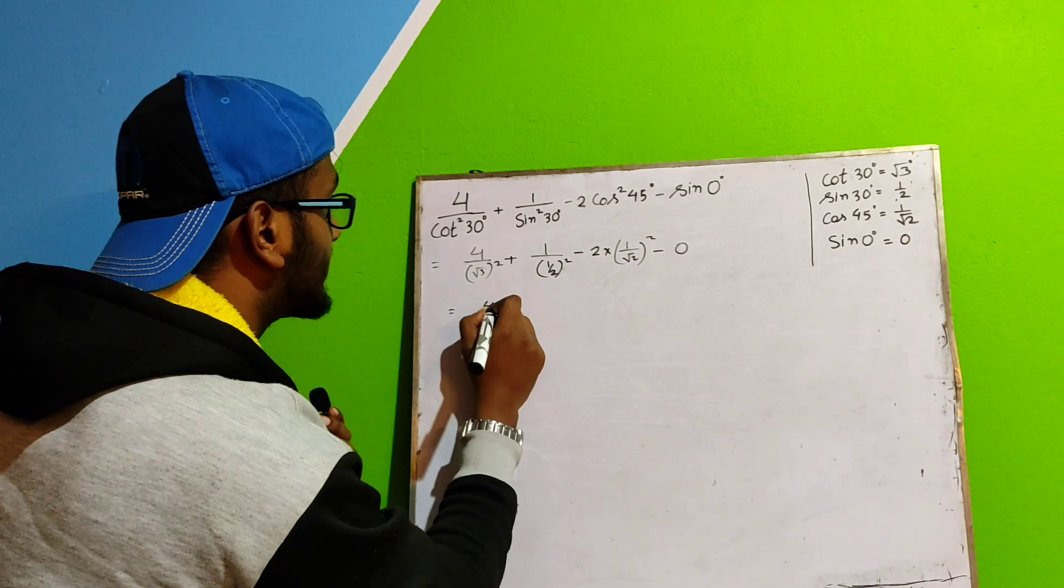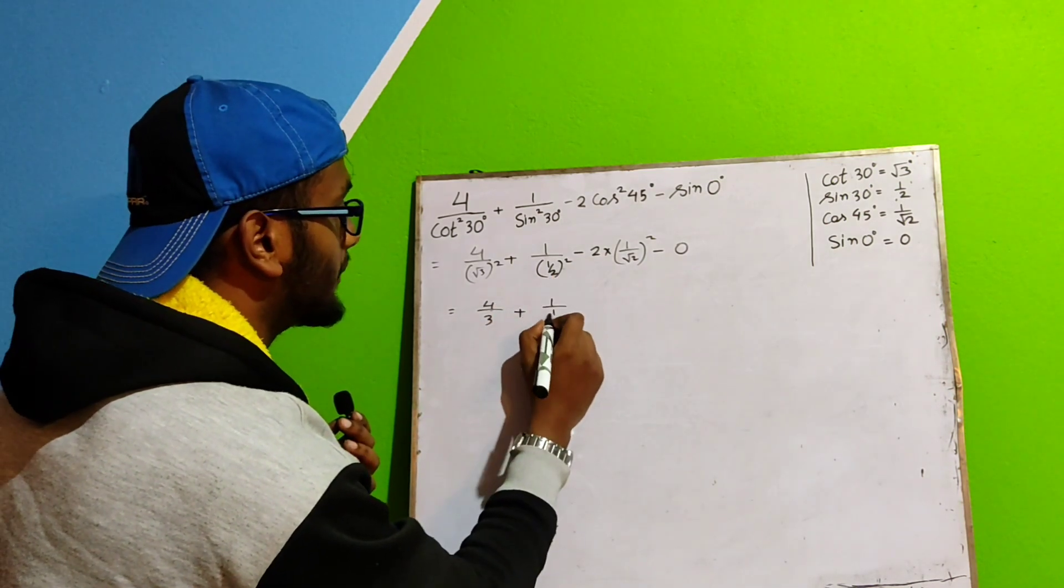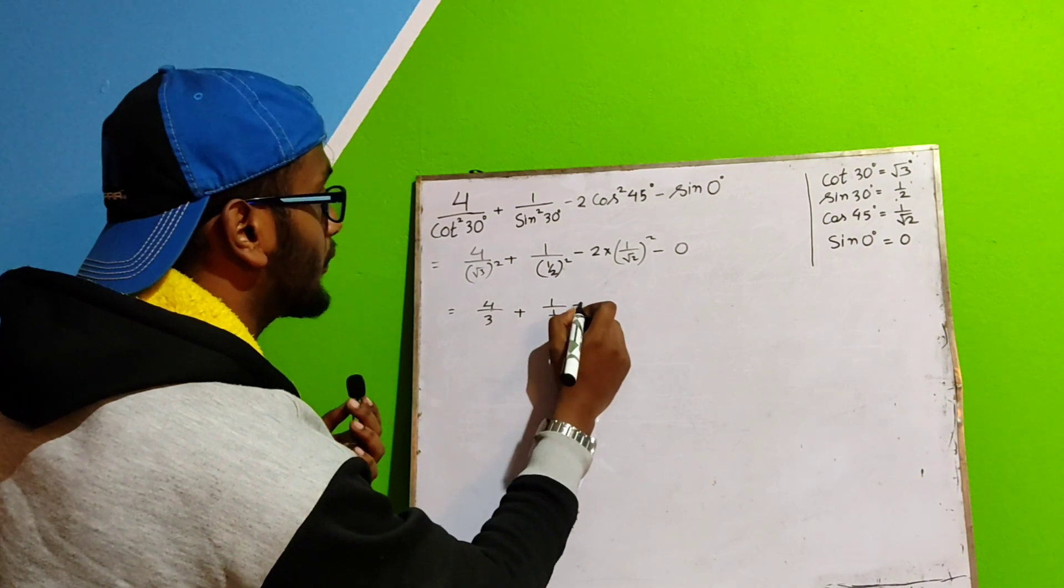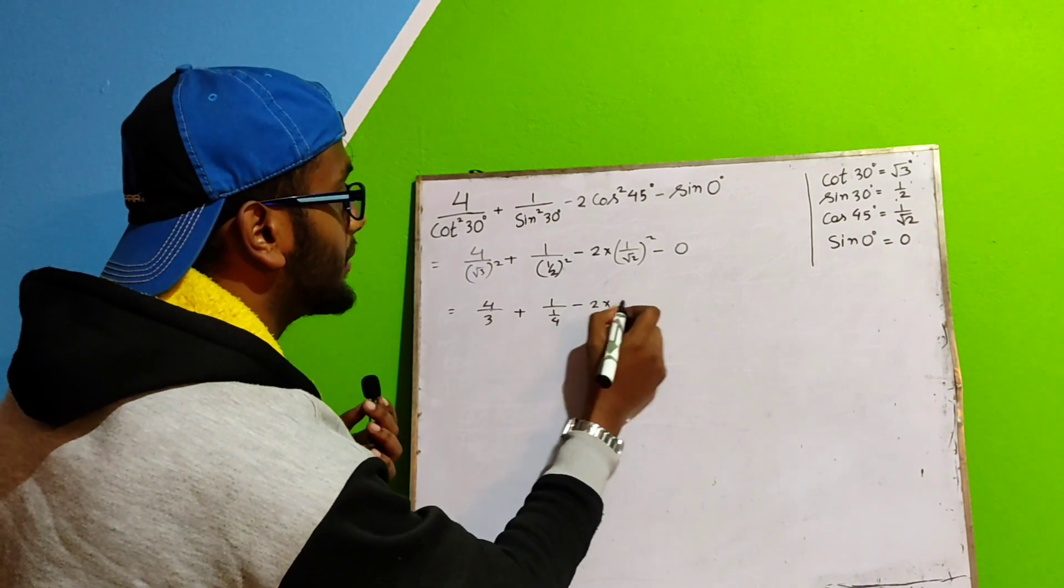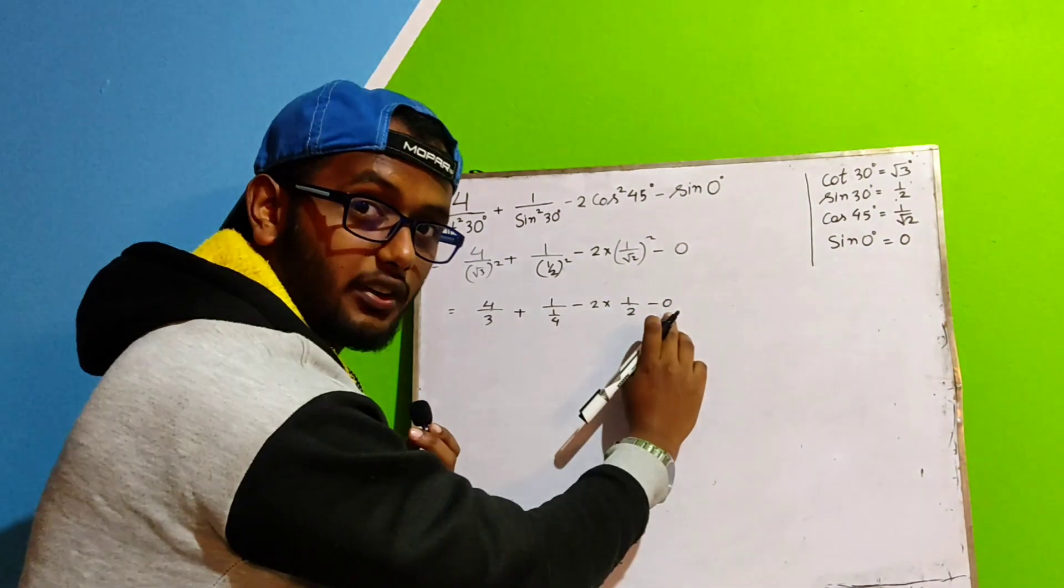Now, on squaring this term, it becomes 4 by 3 plus. On squaring this term, it becomes 1 by 1 by 4 minus. On squaring this term, it becomes 1 by 2 minus 0. From next part, we will not write this 0.